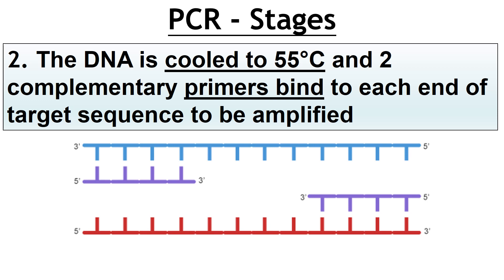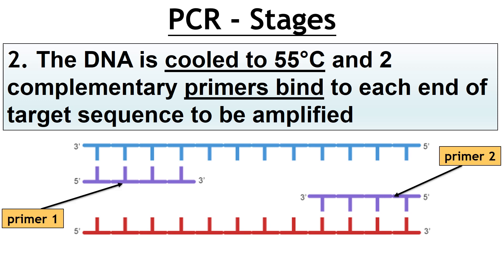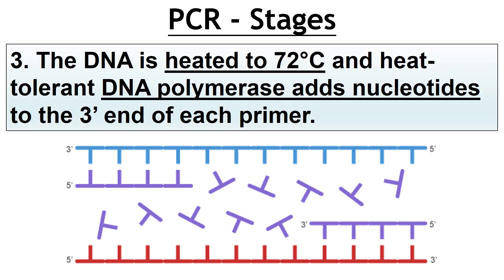When talking about the target sequence, you might be looking at a gene involved in cystic fibrosis or something of interest, specifically targeted with primers made for that sequence. Stage two: DNA cooled and the primers bind. There are two different primers, one for each strand. We then put the temperature back up to 72 degrees Celsius, and a heat-tolerant DNA polymerase adds on nucleotides to the three prime end of each primer.